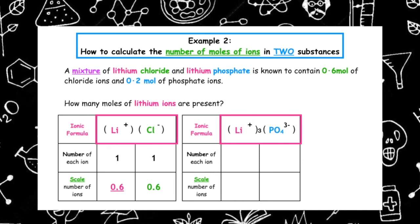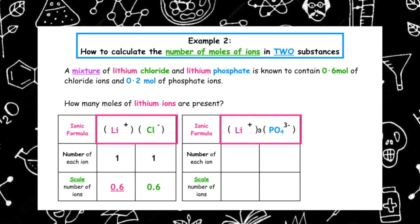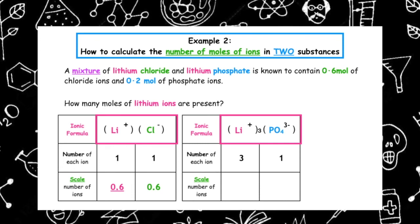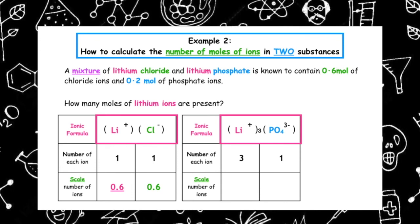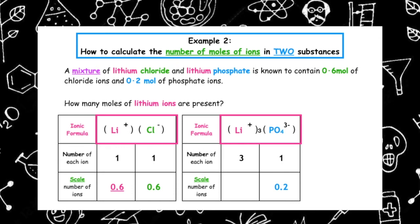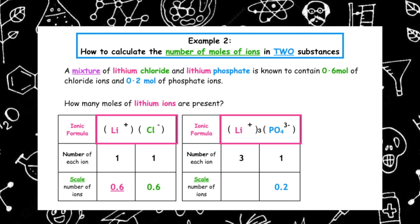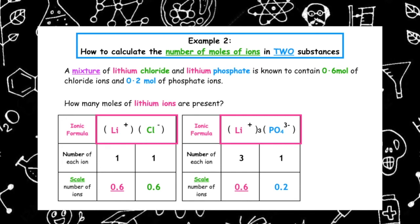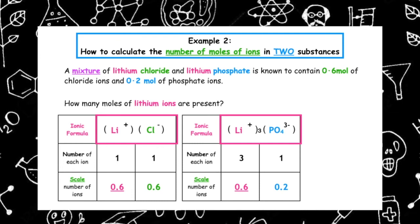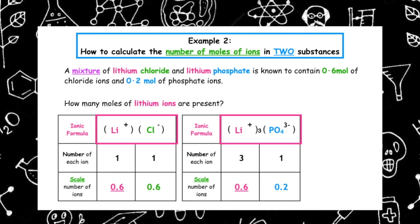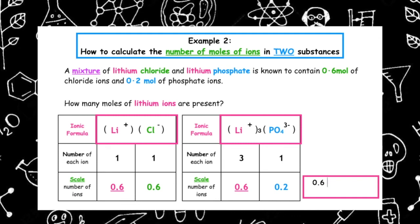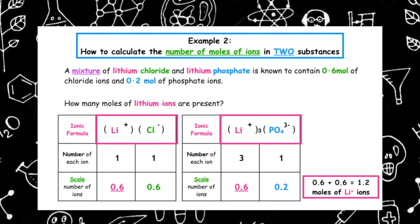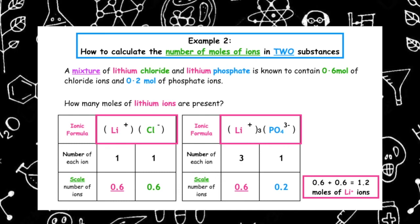We do the same for lithium phosphate. The ratio of each ion from the formula is 3 to 1. We are given 0.2 moles of phosphate, so we place that under the 1 and cross-multiply to scale: 3 times 0.2 divided by 1 gives us 0.6 moles of lithium ions in lithium phosphate. The total number of moles of lithium ions is 0.6 plus 0.6, which gives us 1.2 moles of Li⁺ ions.